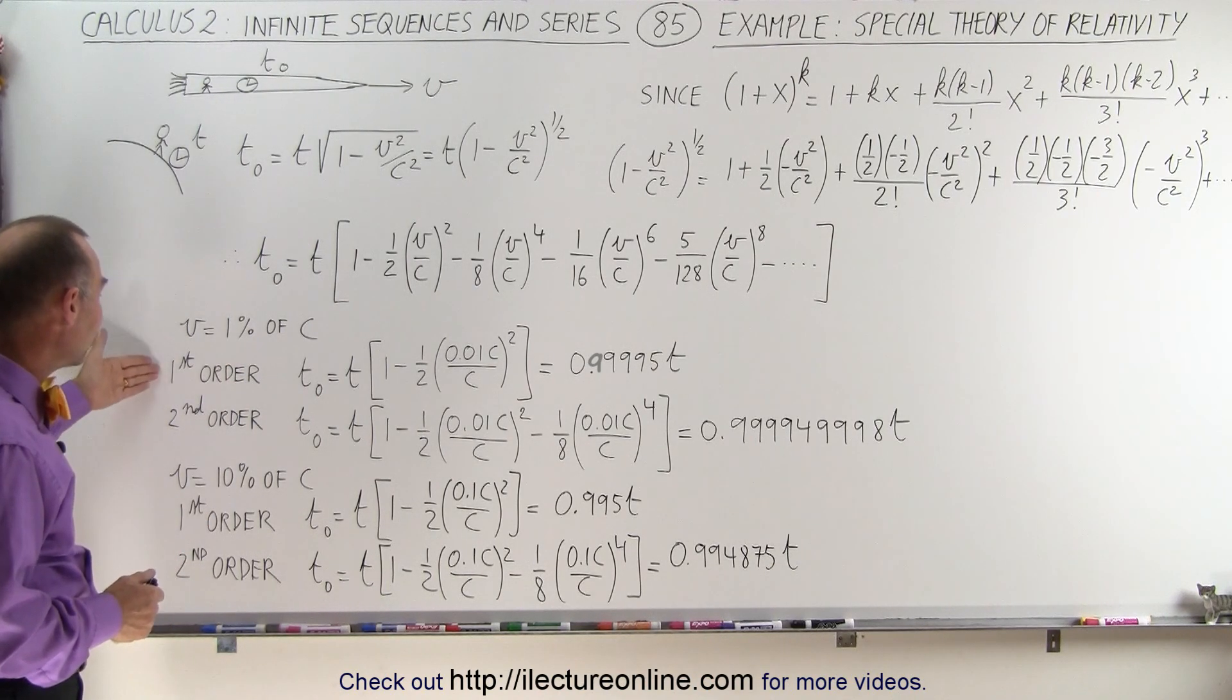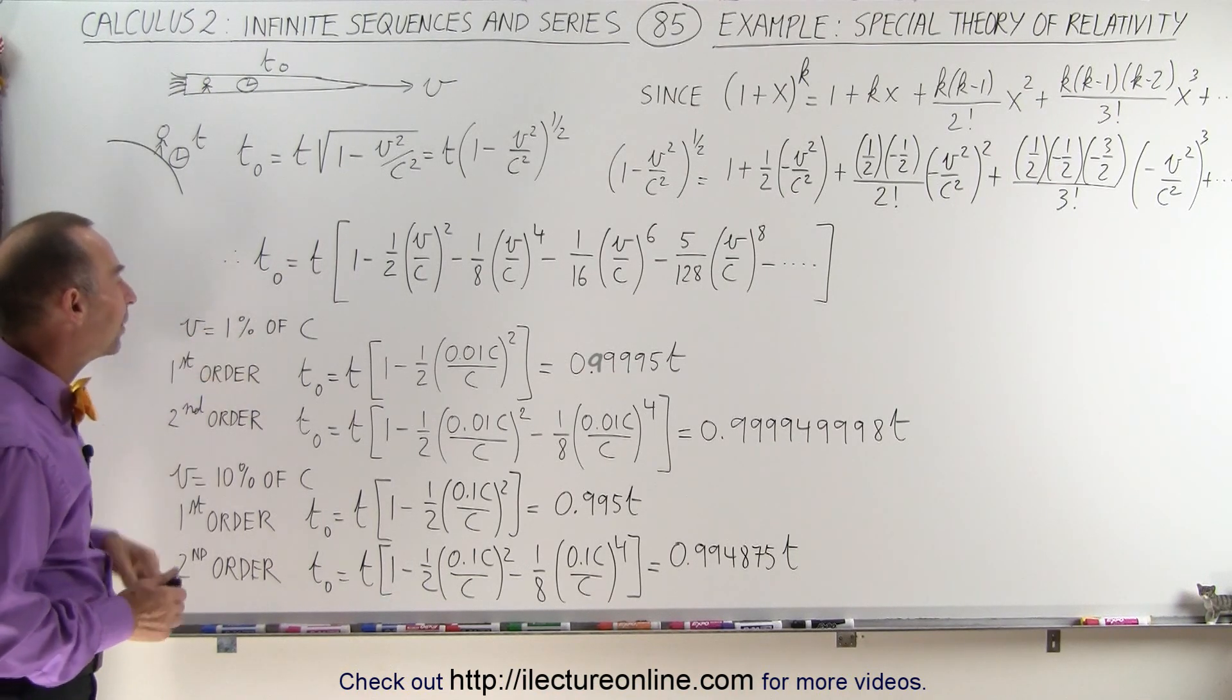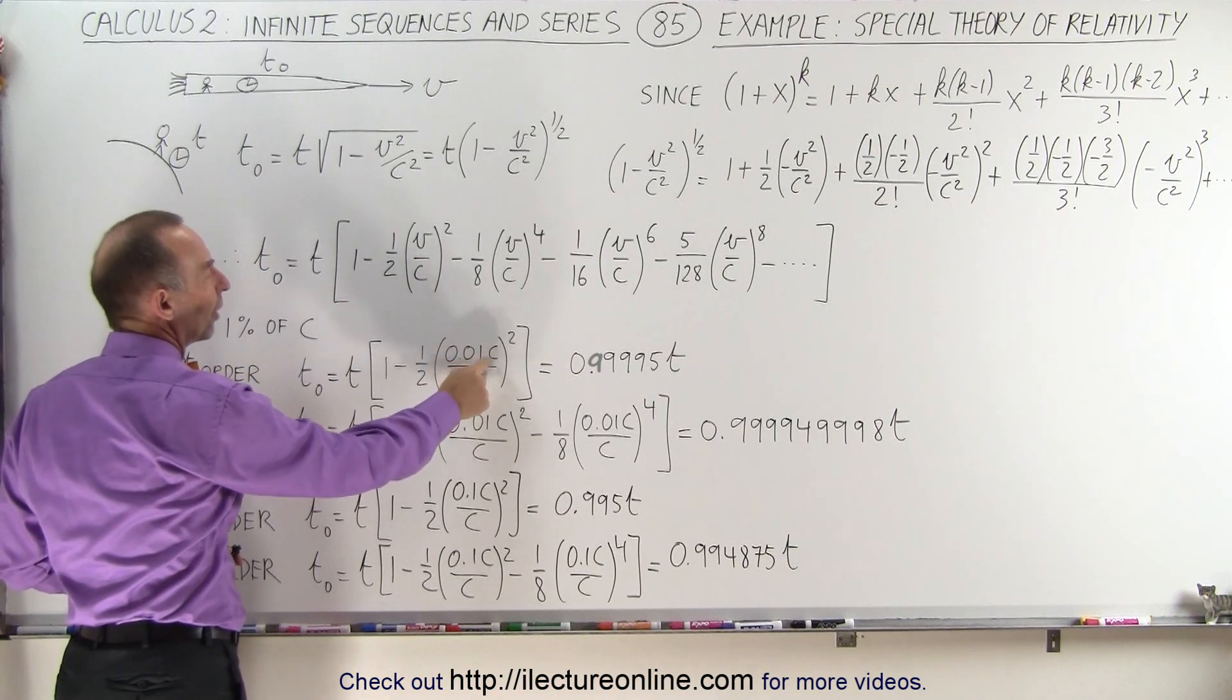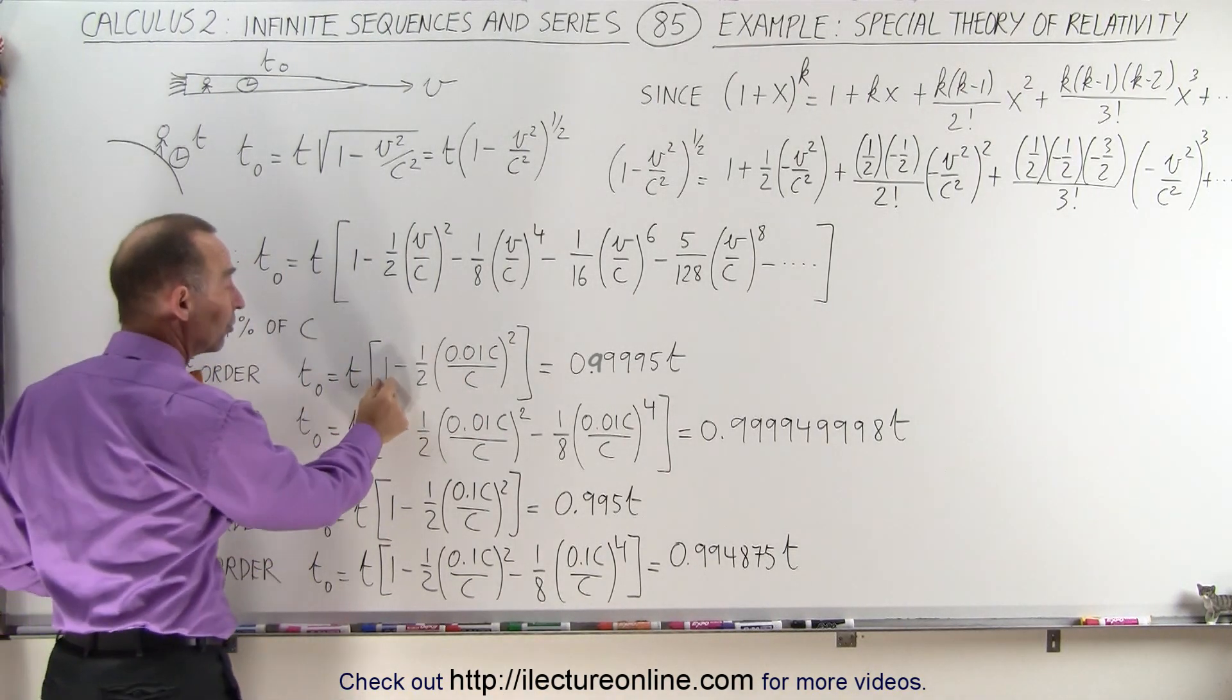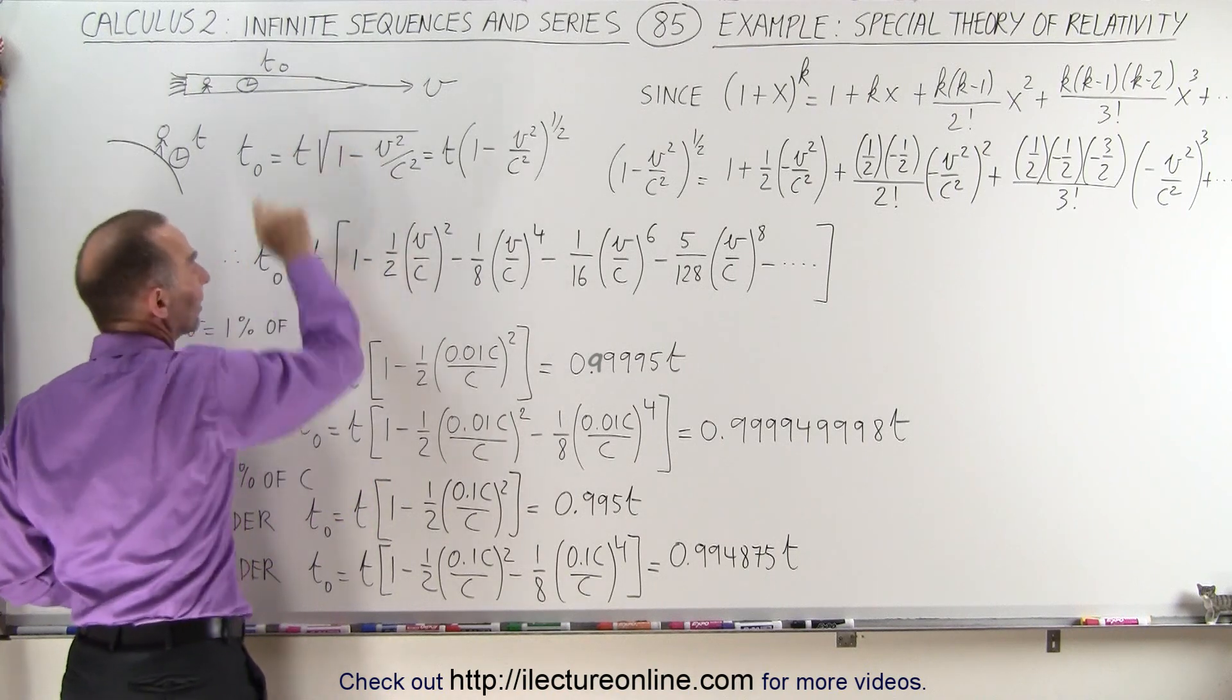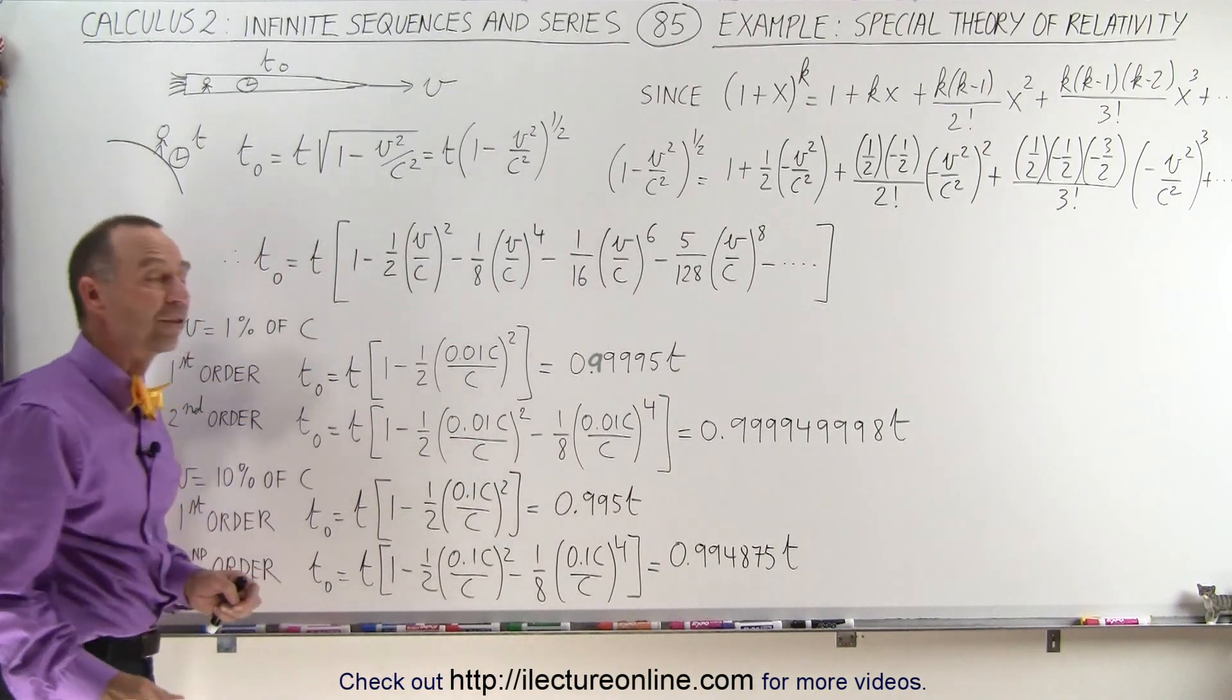So if we're going to do a first order or second order approximation, when v is one percent the speed of light, notice instead of v we write 0.01c. When we evaluate this just to the first order, meaning we only need the first term past the constant term, we can see that the time as measured by the satellite is 0.9995 times the time measured on the earth.